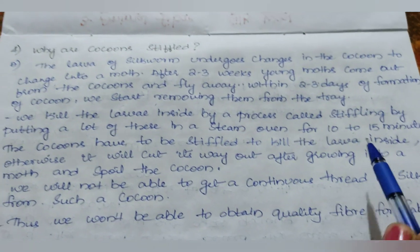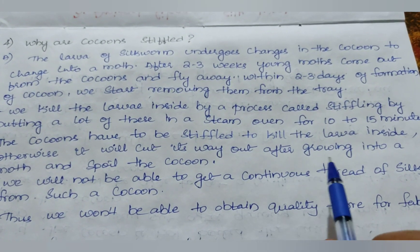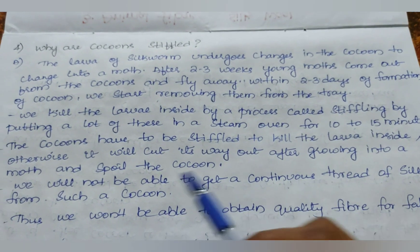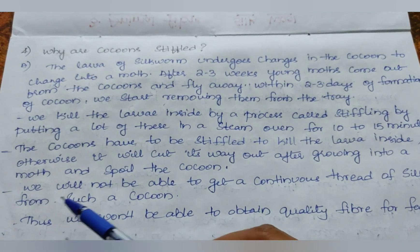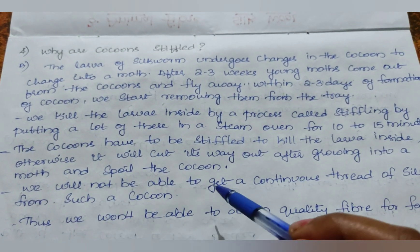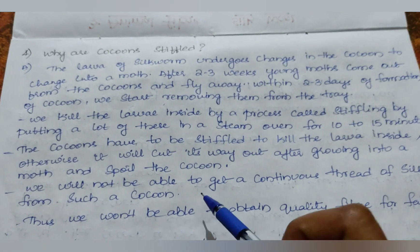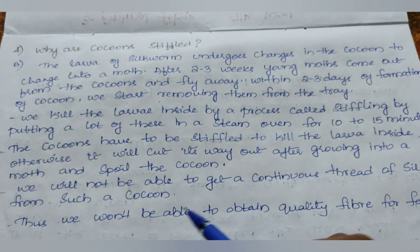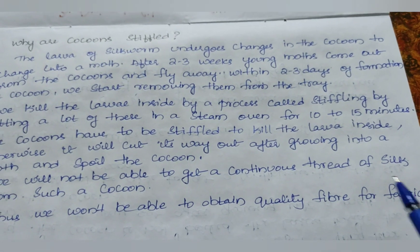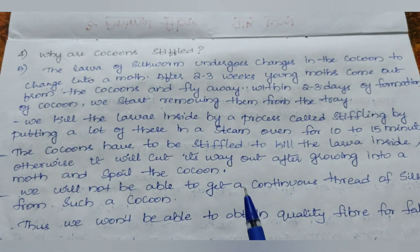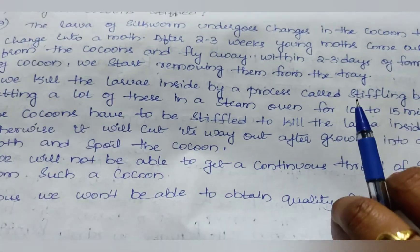The cocoons have to be stifled to kill the larva inside. Otherwise it will cut its way out after growing into a moth and spoil the cocoon. We will not be able to get a continuous thread of silk from such a cocoon. Thus we won't be able to obtain quality fiber for fabrics. Hence the cocoons have to be stifled.